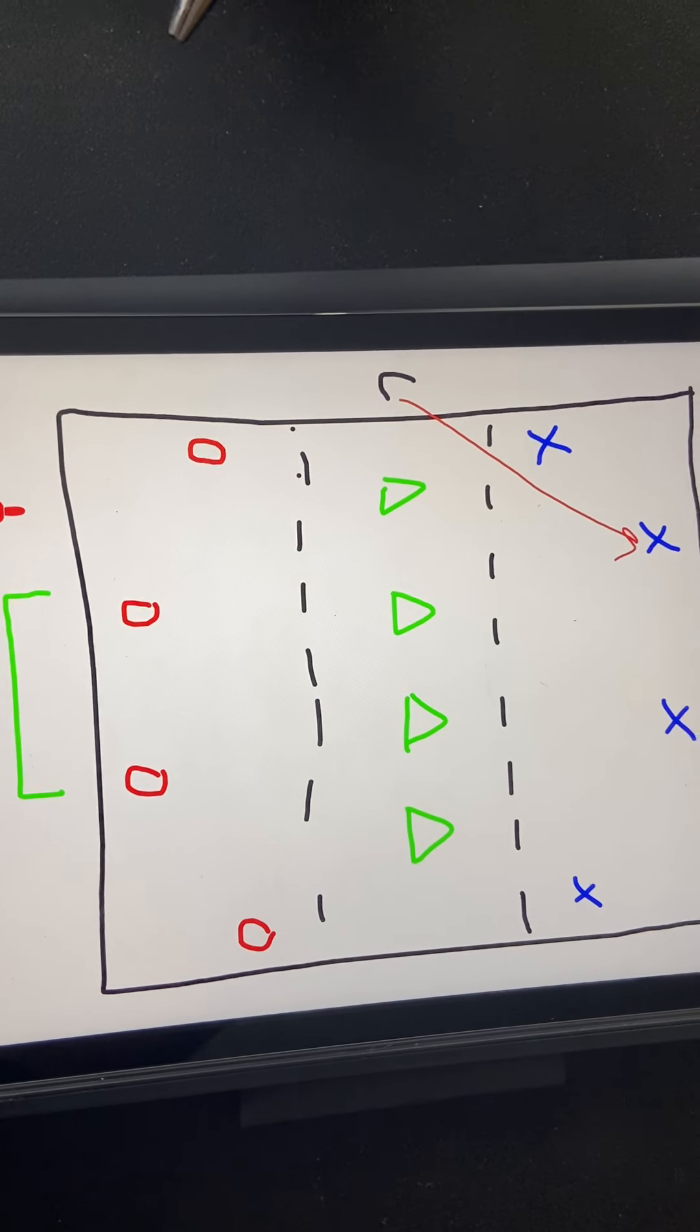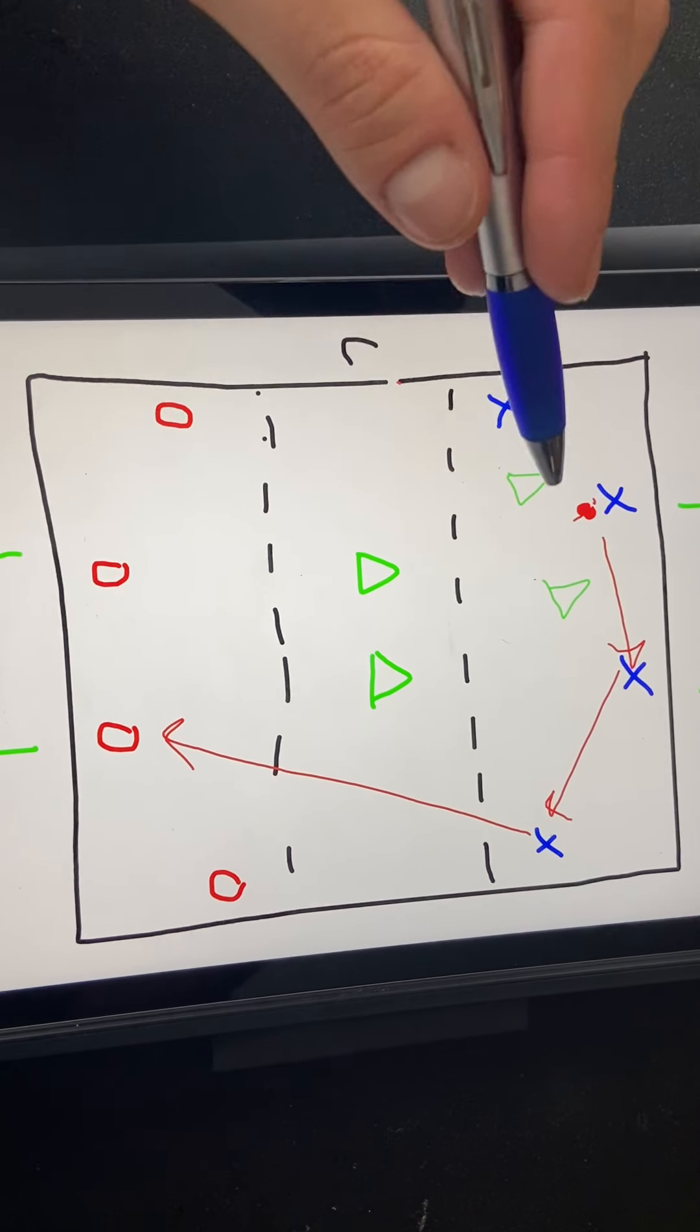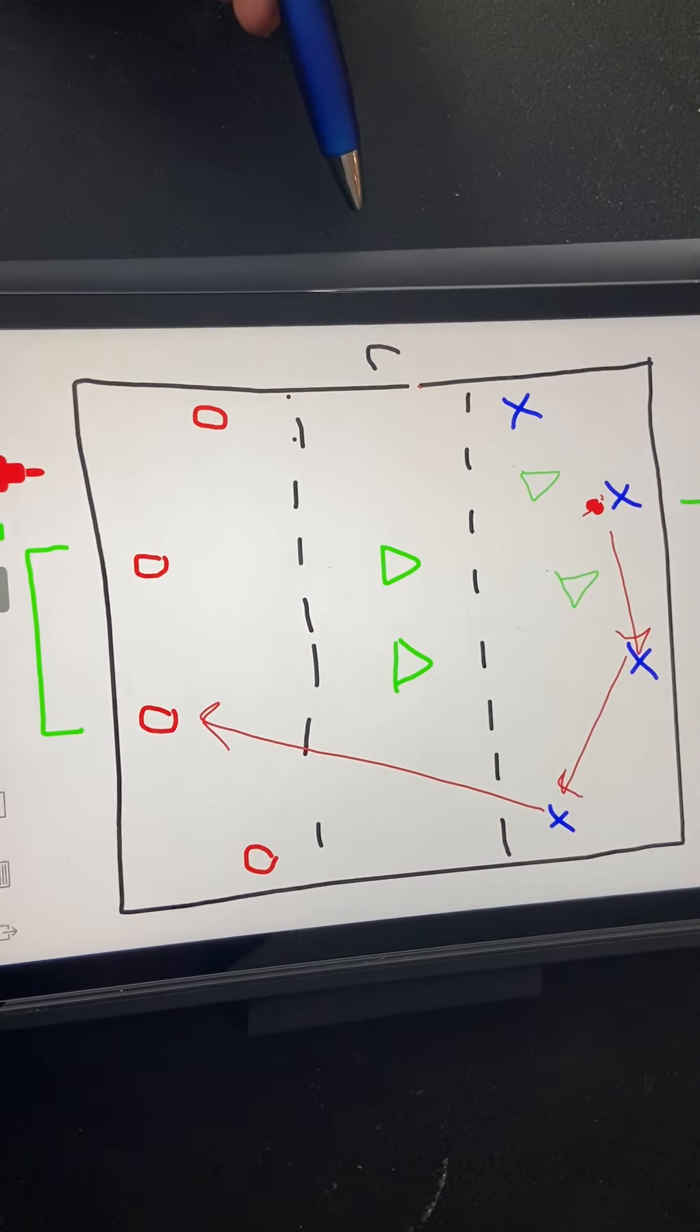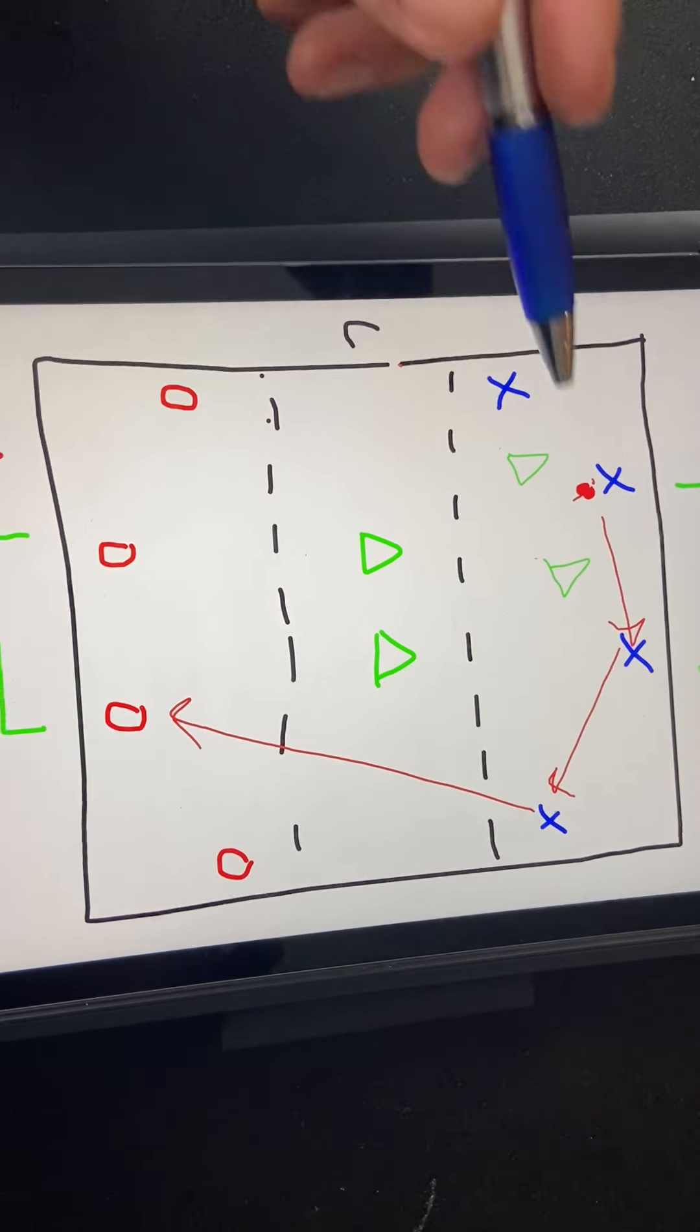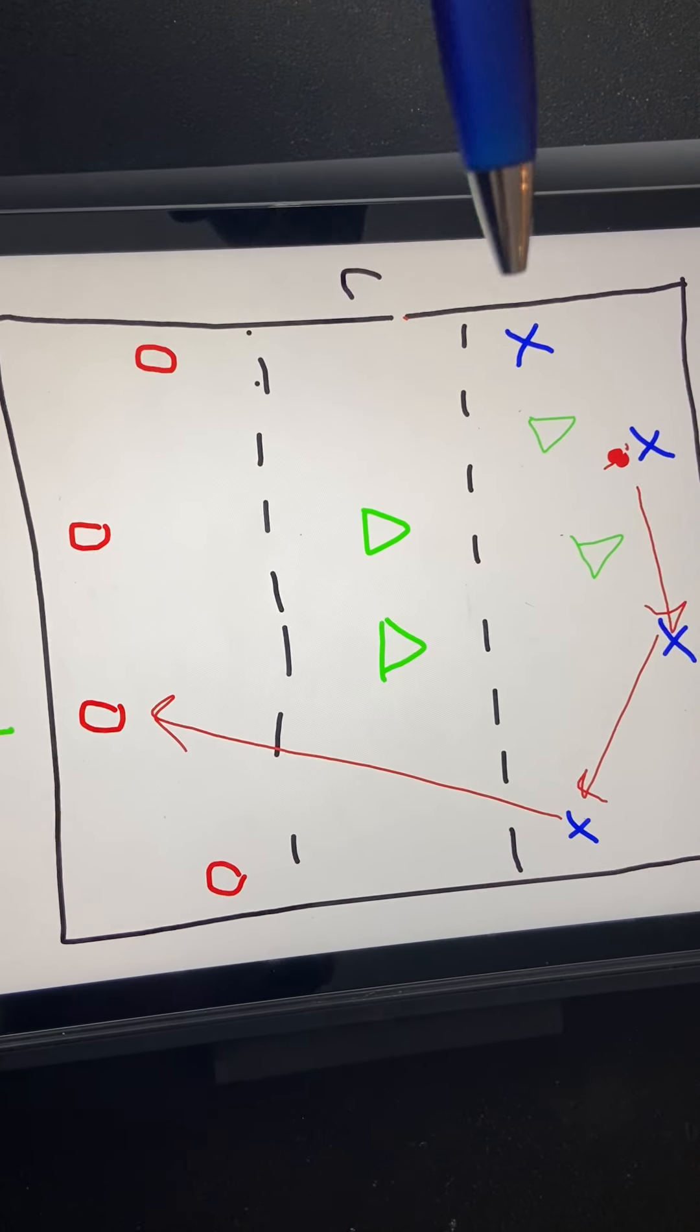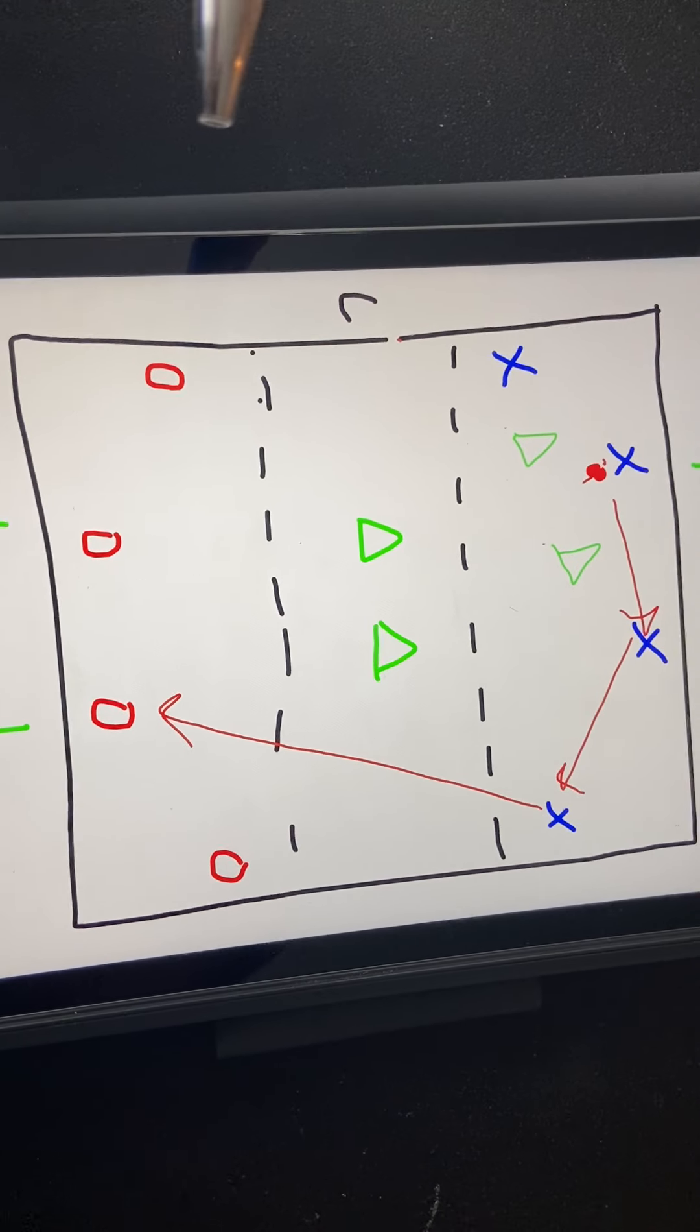And then what happens is we're looking to send two players from the middle to go defend, to create a four versus two. Now, I didn't have any passing restriction or time restriction on this. They could play the split at any time. And the reason was I want the defenders to be engaged. I want the transition to be quick. I want the game to be played.